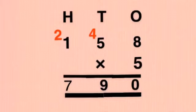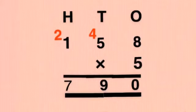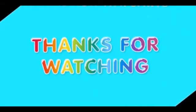Then multiply 1 by 5, which equals 5. Add the carry: 5 plus 2 equals 7. The answer is 790. Bye.